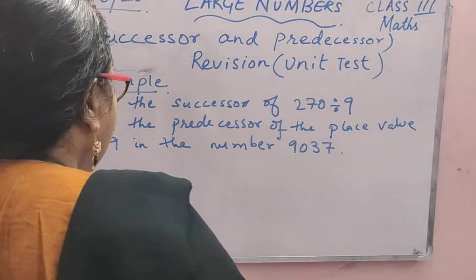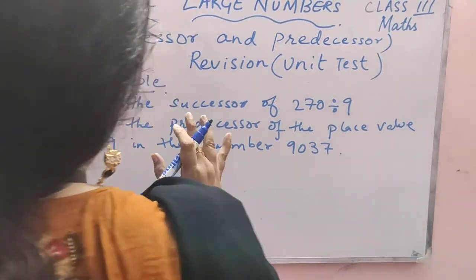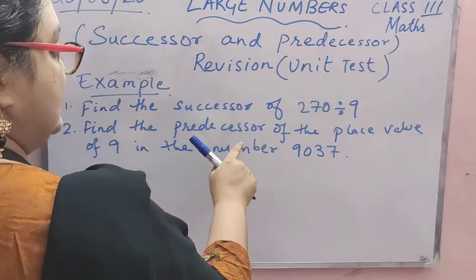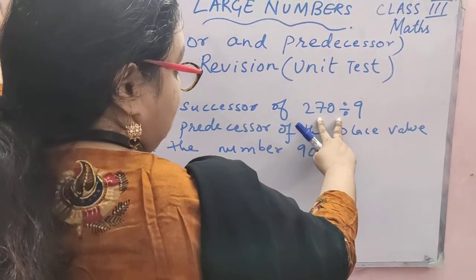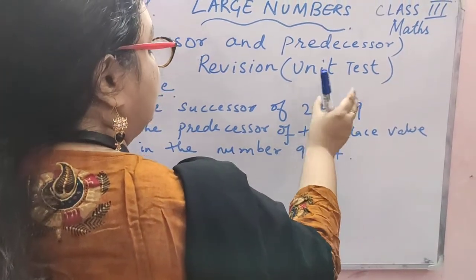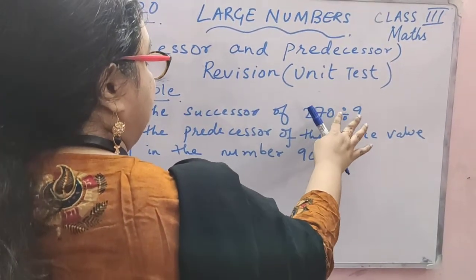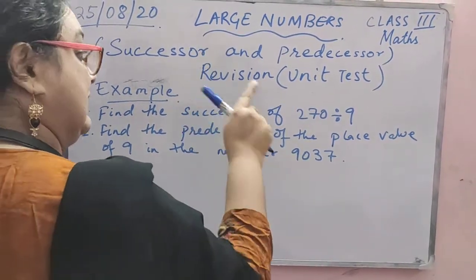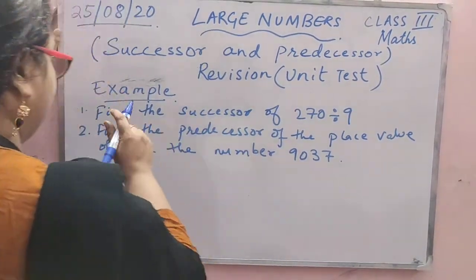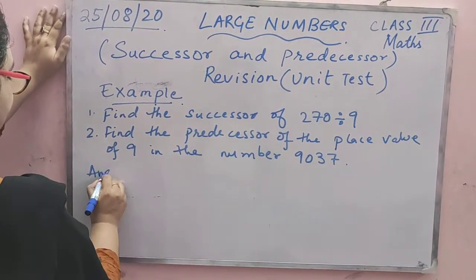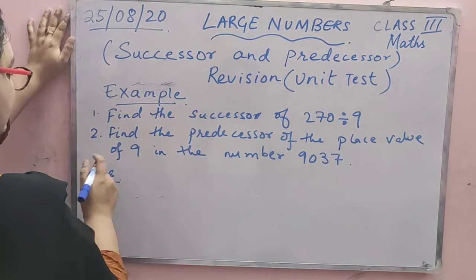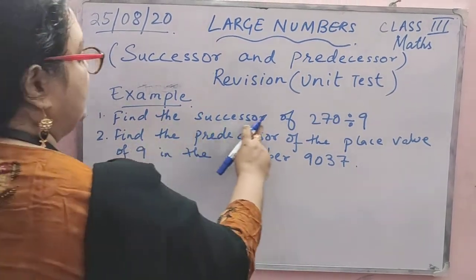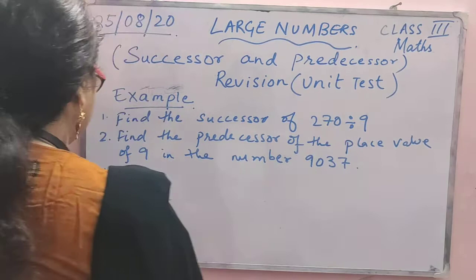Now we are taking two examples. The first is: find the successor of a given expression. Whatever answer you get after dividing it, we have to find the successor of that number. So first we will solve number 1 — we will simplify this.